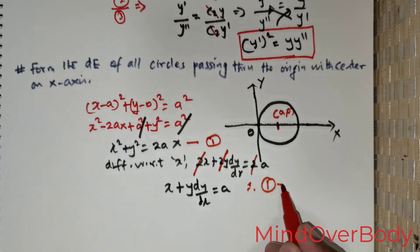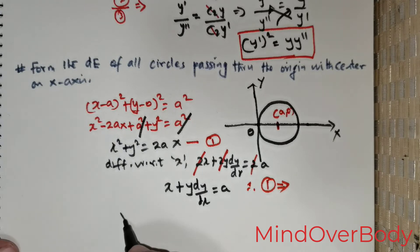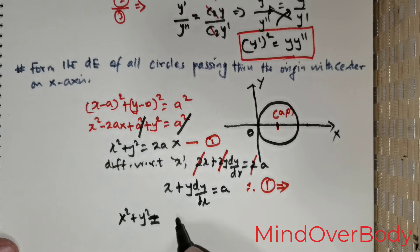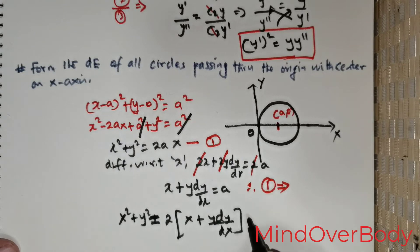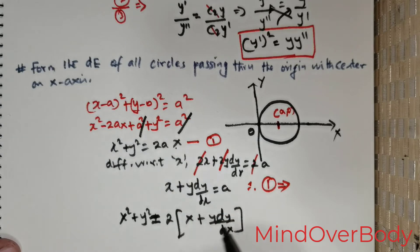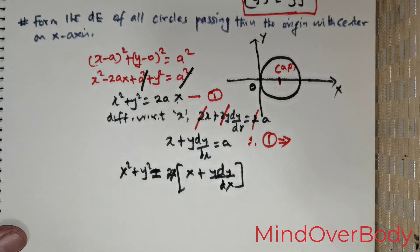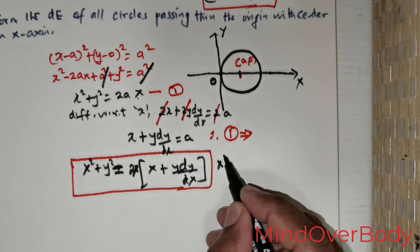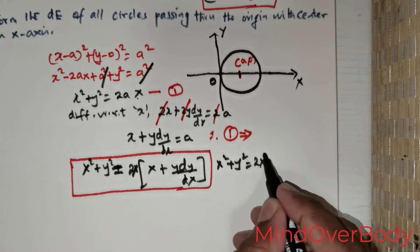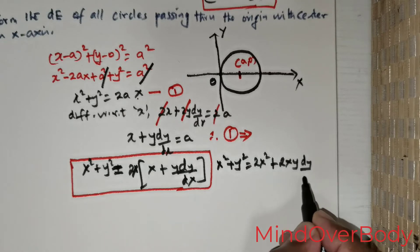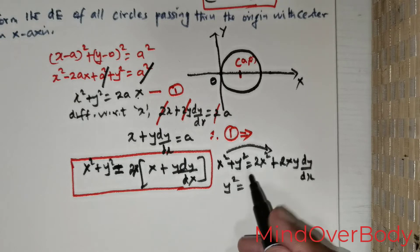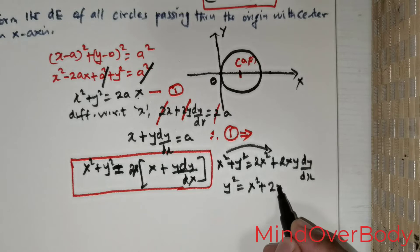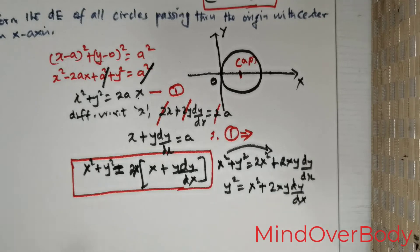Taking a = x + y·(dy/dx) and substituting back into x² + y² = 2ax gives x² + y² = 2x·(x + y·(dy/dx)). Expanding: x² + y² = 2x² + 2xy·(dy/dx). Moving terms: y² = x² + 2xy·(dy/dx). Depending on the requirement you can stop at either form.